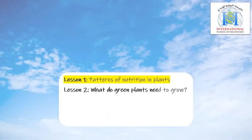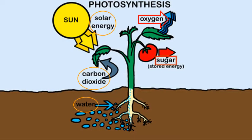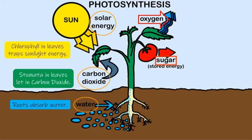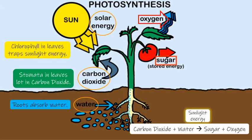Now we're talking about the needs of plants. What do green plants need to grow? Plants take carbon dioxide from the air through small openings in their leaves called stomata. They take water and use sunlight energy to cook a kind of food, which is sugar. Let's write all of these into an equation: carbon dioxide — CO₂ — plus water — H₂O — in the presence of sunlight energy, gives us sugar and oxygen — O₂.